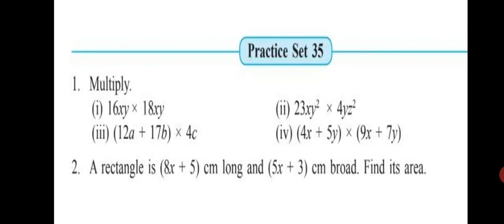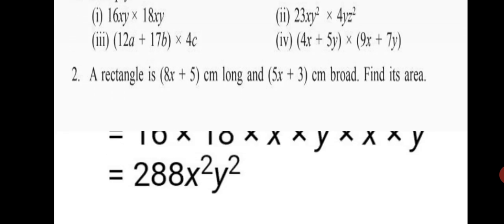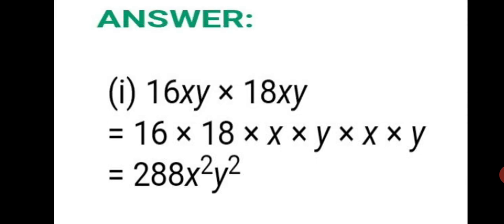Let's move on to Practice Set 35. Question 1 has four sub-questions. First one: 16xy into 18xy. As per the rule, multiply the coefficients first — 16 into 18 — and then multiply the variables. 16 into 18 is 288. How many x? Two, so x squared. How many y? Two, so y squared. This is multiplying a monomial by another monomial, so multiply the coefficients and the variables to get 288x squared y squared.